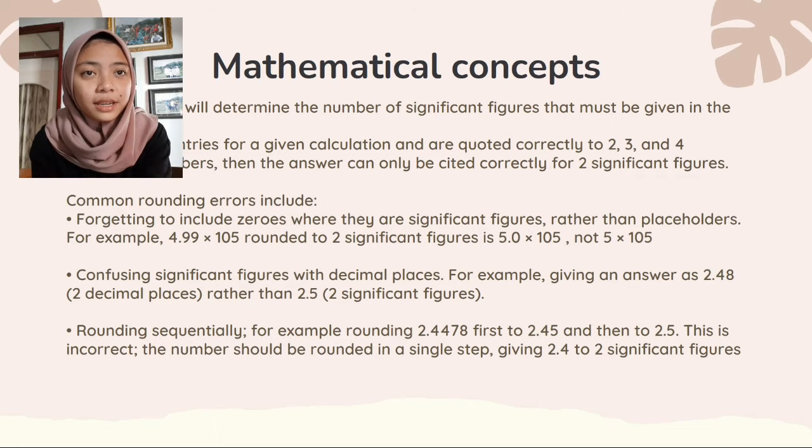The second is confusing significant figures with decimal places. For example, giving an answer as 2.48 (two decimal places) rather than 2.5 (two significant figures).